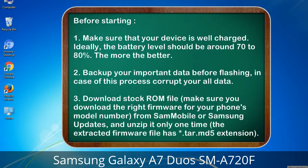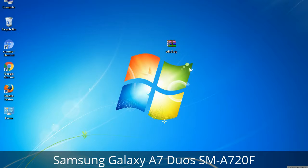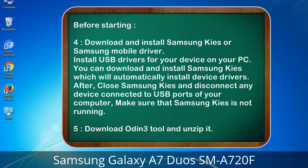Download from Sammobile or Samsung Updates, and unzip it only one time. The extracted firmware file has a *.tar.md5 extension. 4. Download and install Samsung KIS or Samsung mobile driver to install USB drivers for your device on your PC. Samsung KIS will automatically install device drivers. After, close Samsung KIS and disconnect any device connected to USB ports — make sure Samsung KIS is not running. 5. Download Odin3 tool and unzip it.